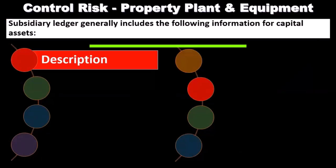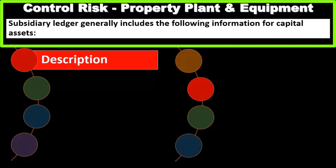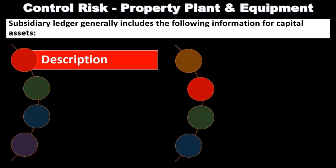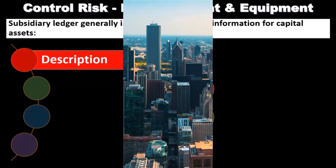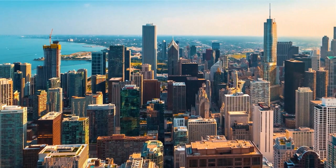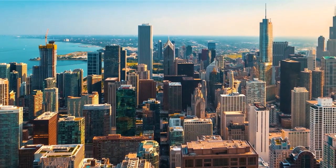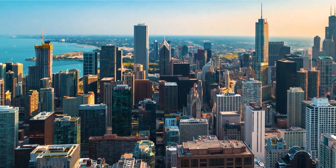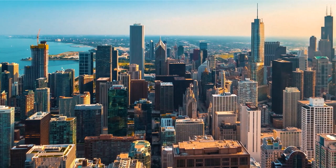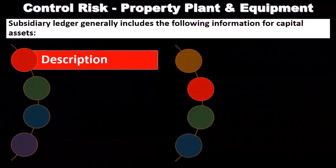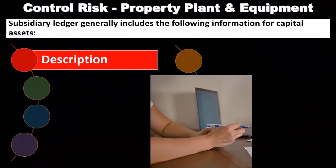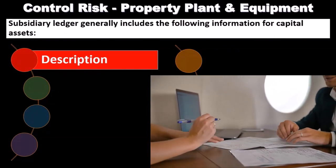When auditing property, plant, and equipment, we obtain a subsidiary ledger. The balance sheet shows PP&E categorized by land, building, equipment, and so on, along with accumulated depreciation — but these are lumped together by category. We need a subsidiary ledger that breaks out the supporting documentation in detail so we know exactly what equipment is on the books.